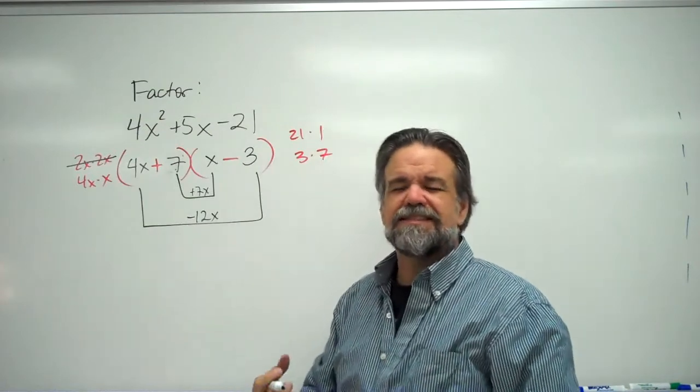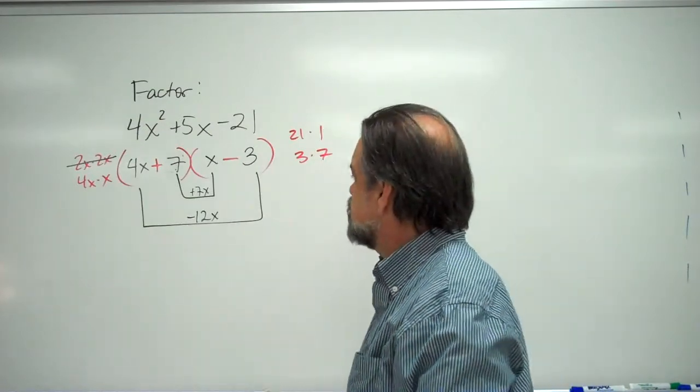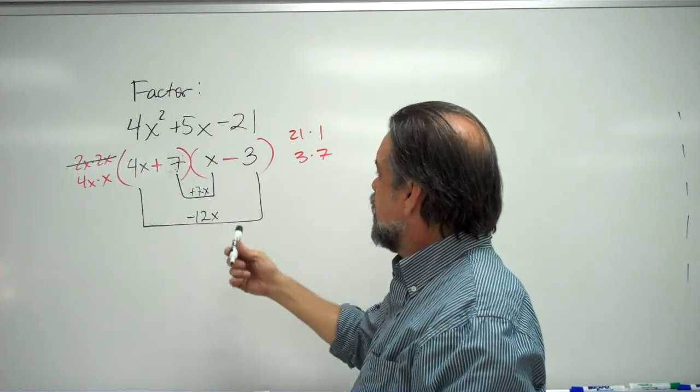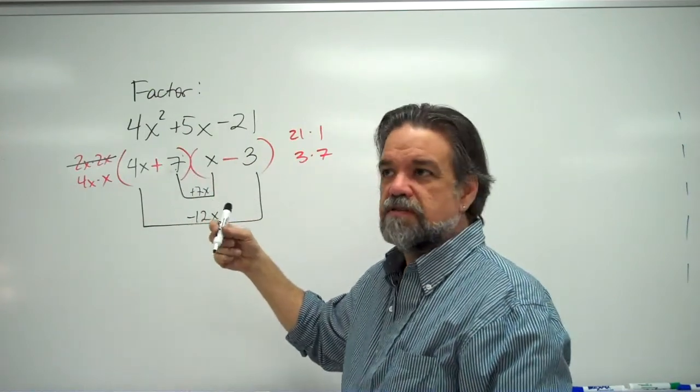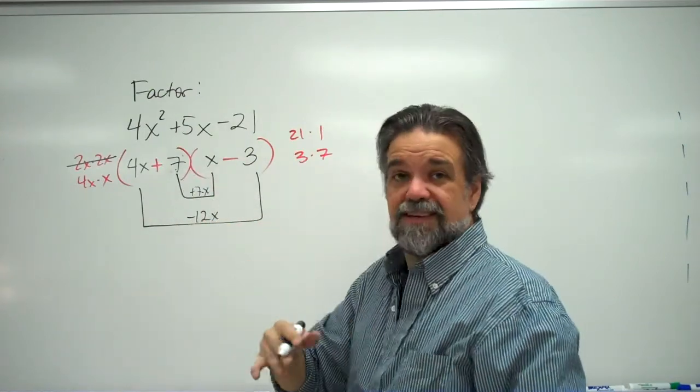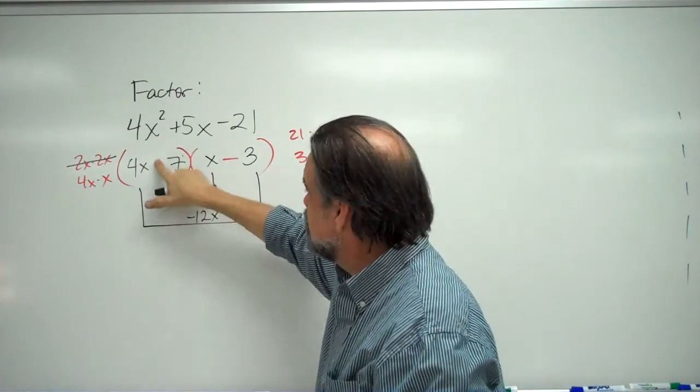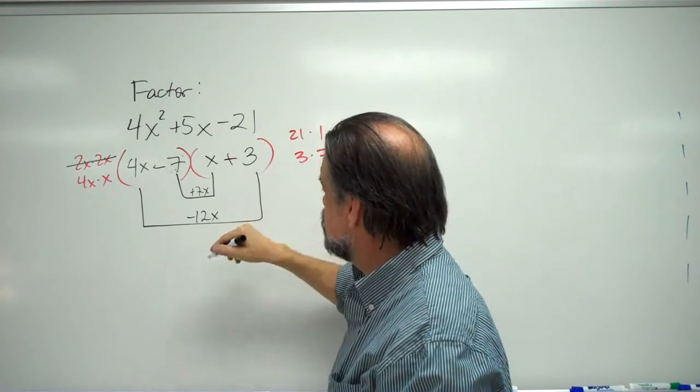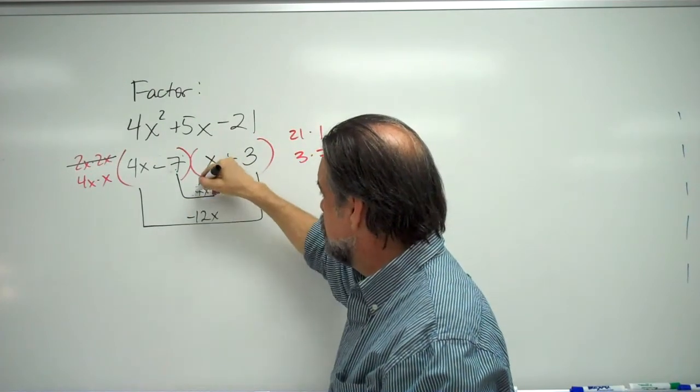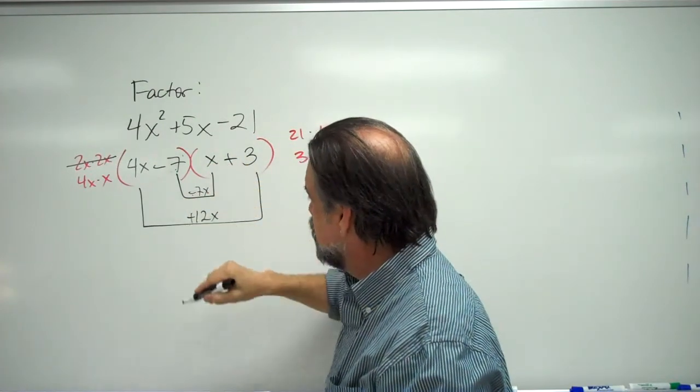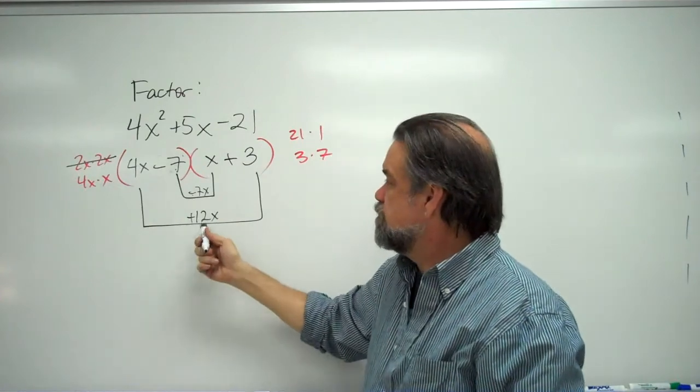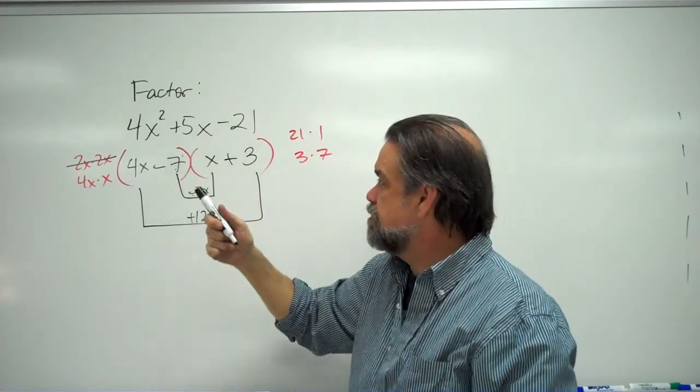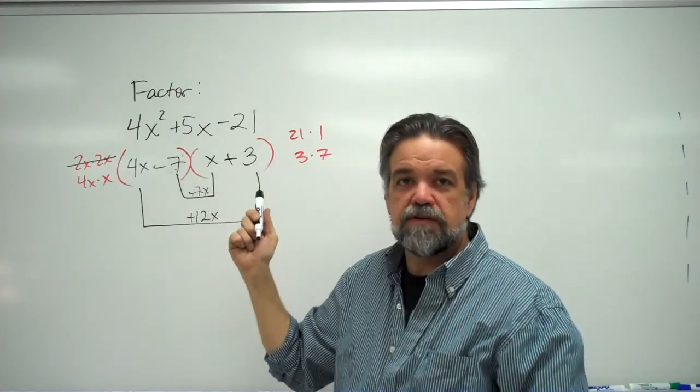No, it's not. It's negative 5x. What can I do? I got a negative 5x instead of a positive 5x. What can I do to fix this? It's easy. Switch the signs. Make this one negative, make this one positive, and all of a sudden, all of our troubles melt away. Now I've got positive 12x minus 7x, which is positive 5x, and those are my factors.